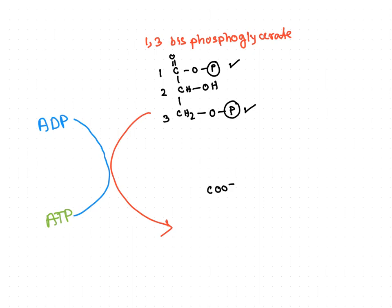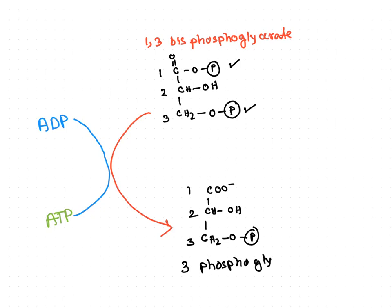After making ATP, the next intermediate produced is 3-phosphoglycerate. In this product, the phosphate group at the first carbon is taken away, while the phosphate group at the third position remains intact. This structure is now known as 3-phosphoglycerate, and this represents one of the substrate-level phosphorylation reactions.